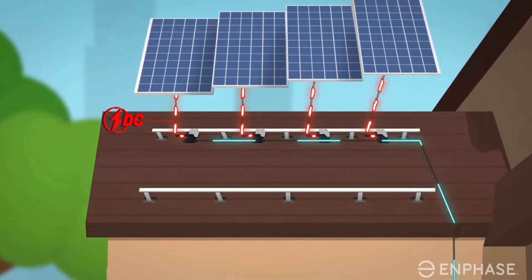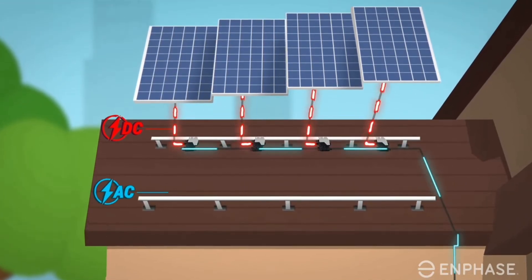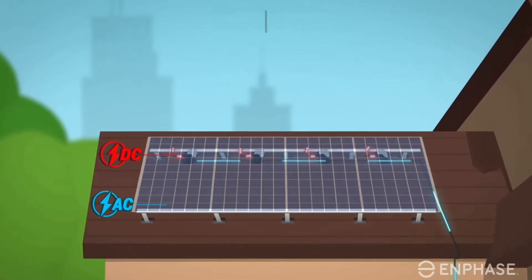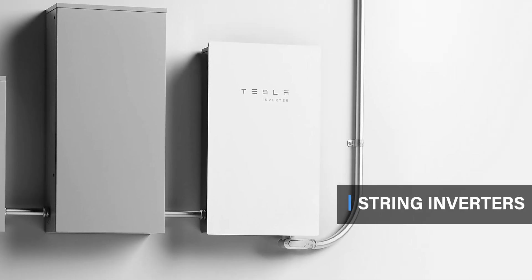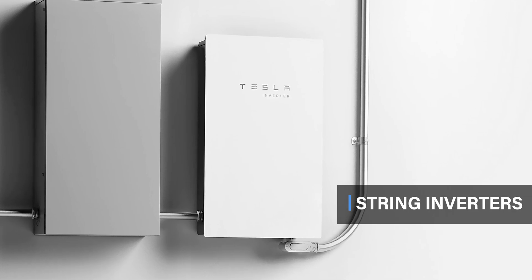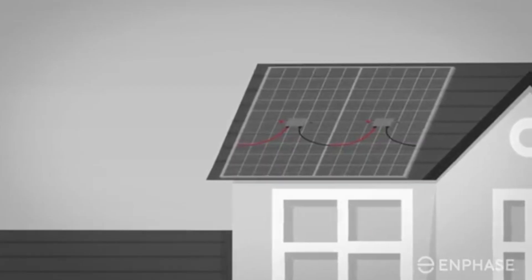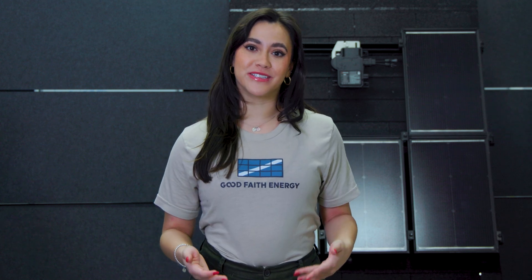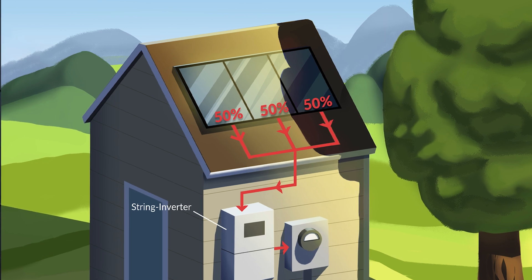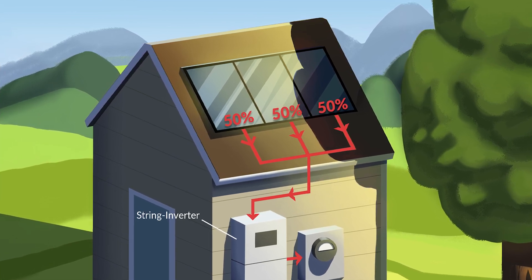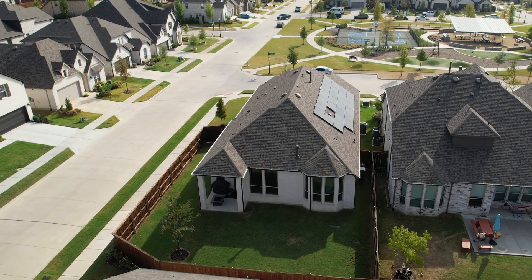String inverters are a pretty common choice. They're installed at a central point and connect to multiple solar panels, forming strings. This means that the panels will operate at the same level as each other. If one panel is in the shade and performs at a lower level, it affects the entire string's output.